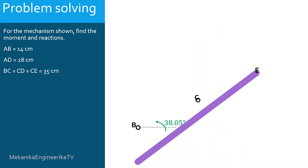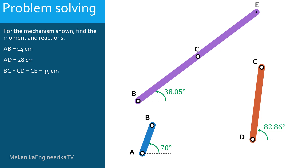Let's start by drawing the free-body diagrams of the three bars. We need to split the linkage apart. First we need to consider the external force of 500 N applied in point E, and the external moment M on the bar AB. In C, we have a pin joint between bar BCE and bar CD. A pin joint blocks relative translations in horizontal and vertical directions. Thus we need two reactions at pin C: CX and CY. The reactions CX and CY applied on bar BCE are arbitrarily considered positive; thus the reactions CX and CY applied on bar CD are considered negative, opposite to the ones applied on bar BCE.